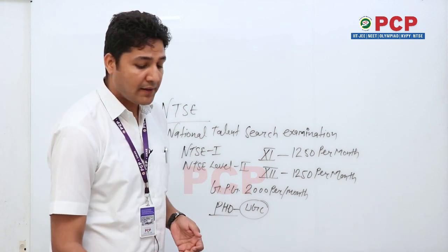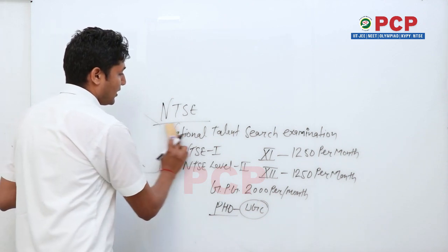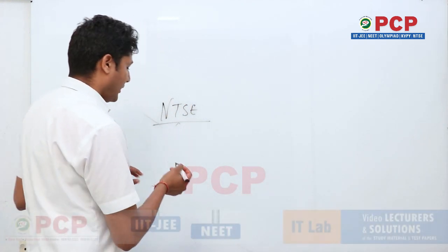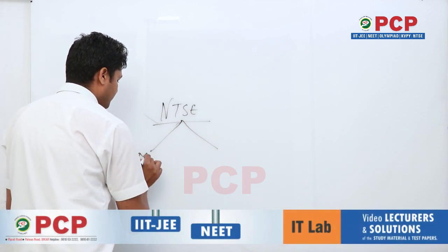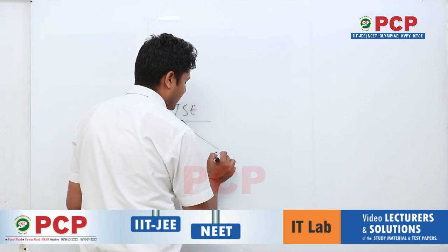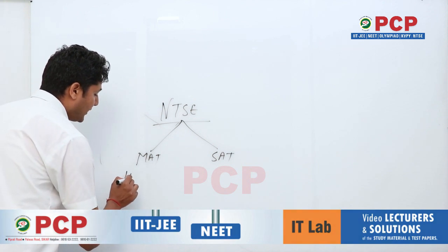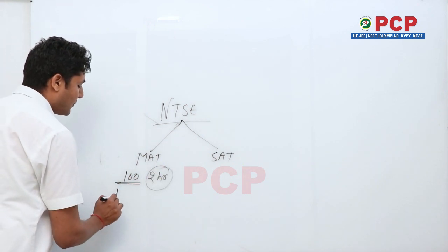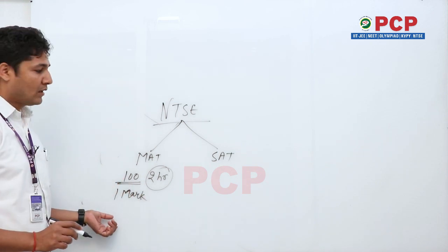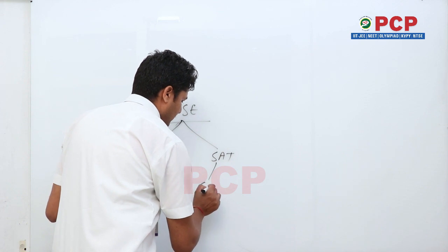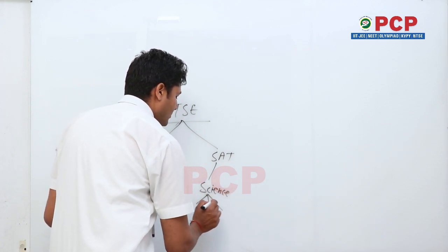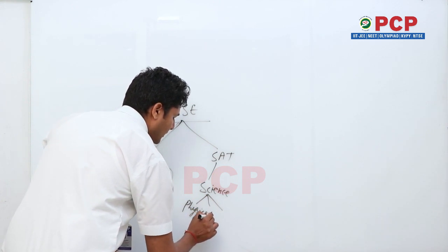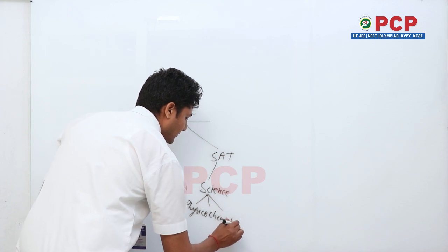We need to understand the basics of this exam. NTSC conducts two papers in one day. The first one is MAT (Mental Ability Test) and the second one is SAT (Scholastic Aptitude Test). MAT has 100 questions to be solved in 2 hours, with each question carrying one mark. In SAT, Science is divided into three parts: Physics, Chemistry, and Biology.